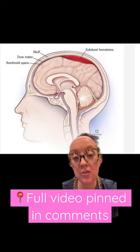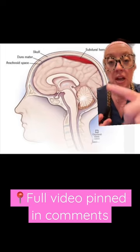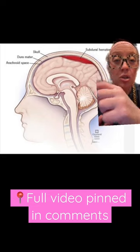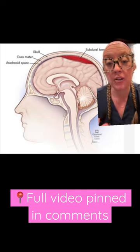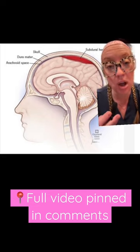Here's a cartoon depiction of what a subdural hematoma is. There are bridging veins that go from your brain to the dura, and these veins can get torn with trauma.